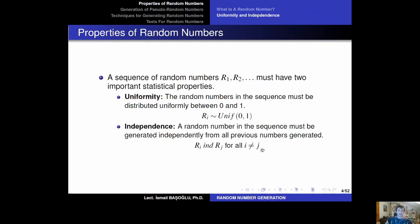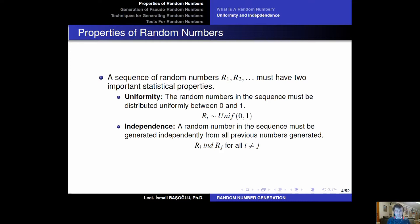What do we expect from random numbers? We basically want them to be between zero and one, uniformly distributed. When you generate a sequence of random numbers, the sequence must conform to two important statistical properties. The uniformity property means these random numbers must be distributed uniformly between zero and one. If we have two subintervals with equal lengths, those two intervals should have the same probability to generate a random number.